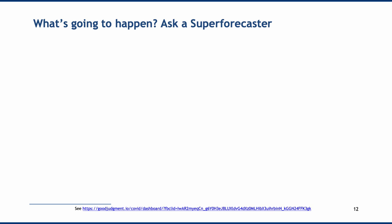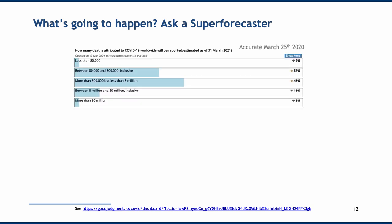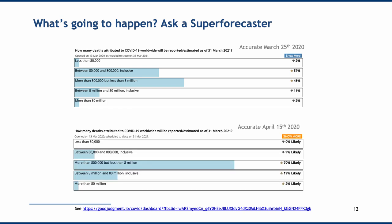During the COVID pandemic it was not always obvious which voices to listen to. I found superforecasting quite useful — the Good Judgment Project brings together various superforecasters. On March 25, 2020, there was a 37% chance the global death toll would be between 80,000 and 800,000, and a 48% chance it would be between 800,000 and 8 million. By April 15, 2020, those odds shifted dramatically: a 70% chance of 800,000 to 8 million deaths, and a 20% chance of 8 to 80 million. Those projections updated quickly based on new information.